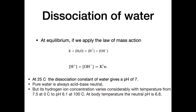The most important contribution to pH is the dissociation of water. At equilibrium, applying the law of mass action, the dissociation constant multiplied by water equals the hydrogen ion concentration multiplied by the hydroxyl ion concentration. At 25°C, the dissociation constant of water gives a pH of 7. The conception that the normal pH is 7 is a misconception — it depends on temperature. Pure water is always acid-base neutral, but pH 7 is not necessarily the neutral point.